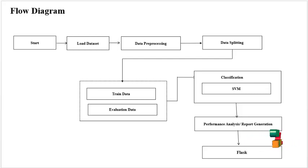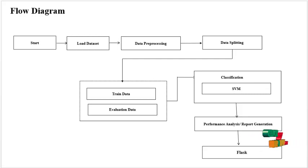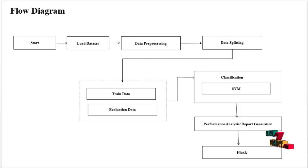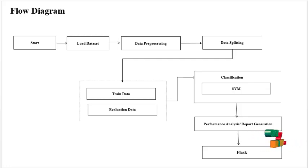Next, classification — this is the algorithm implementation. We are implementing the SVM algorithm, that is Support Vector Machine. Then performance analysis: generating F1 score, recall, accuracy, and precision. Next, we are implementing the confusion matrix.